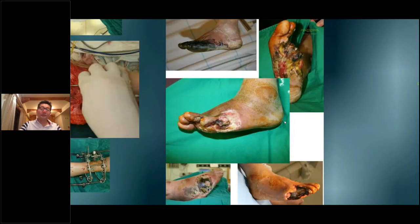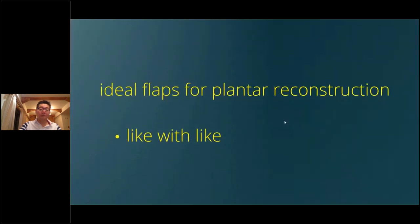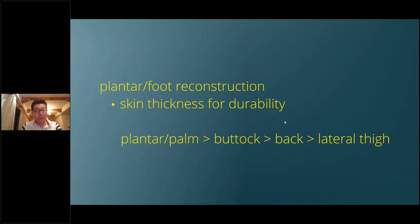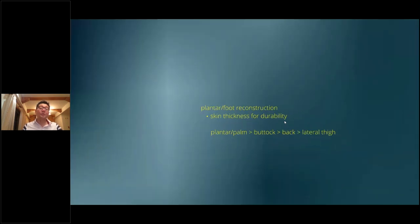Let's look at these defects and think about the algorithm. What about plantar reconstruction? How large is the defect? In the plantar surface, we also have to think about the durability of the skin — the thickness of the skin itself. In our body, thickness is all different. The plantar and palmar surface is the thickest skin, the next is buttock, then back, and then the anterior surface, especially the anterolateral thigh.